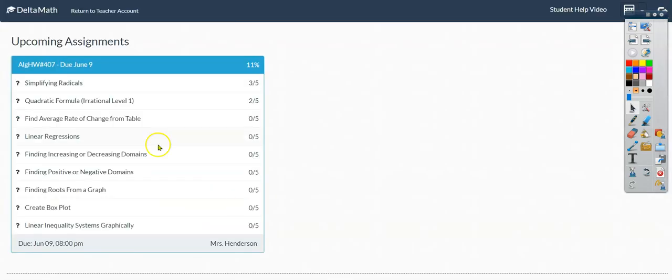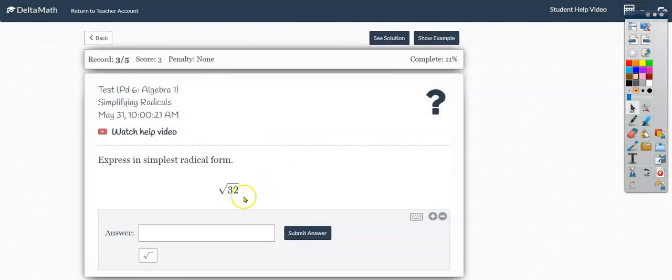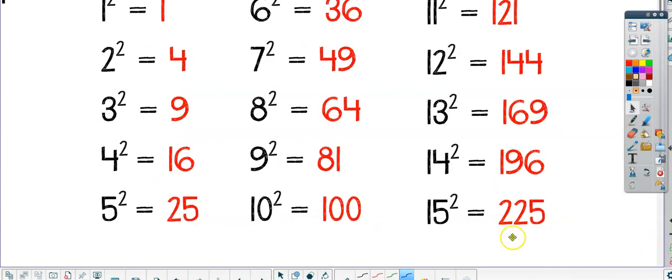Let's take a look at simplifying radicals. When you simplify a radical, you are looking to rename it as the product of two factors instead of just the number 32. What you want to use are the perfect square factors. Here I have the first 15, and 32, if you take half of that, it's about 15, then you would be trying to divide 32 by any of these perfect square numbers that are below half of it.